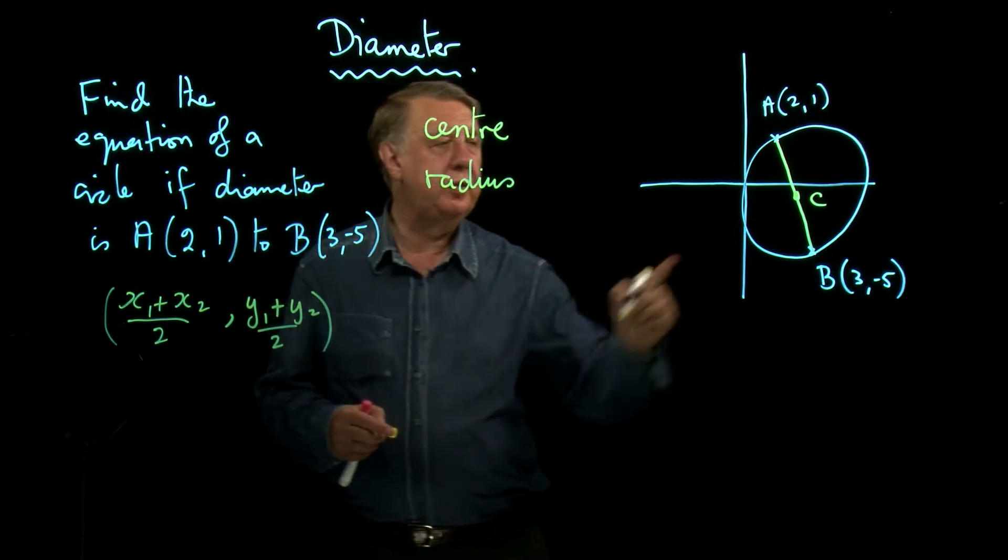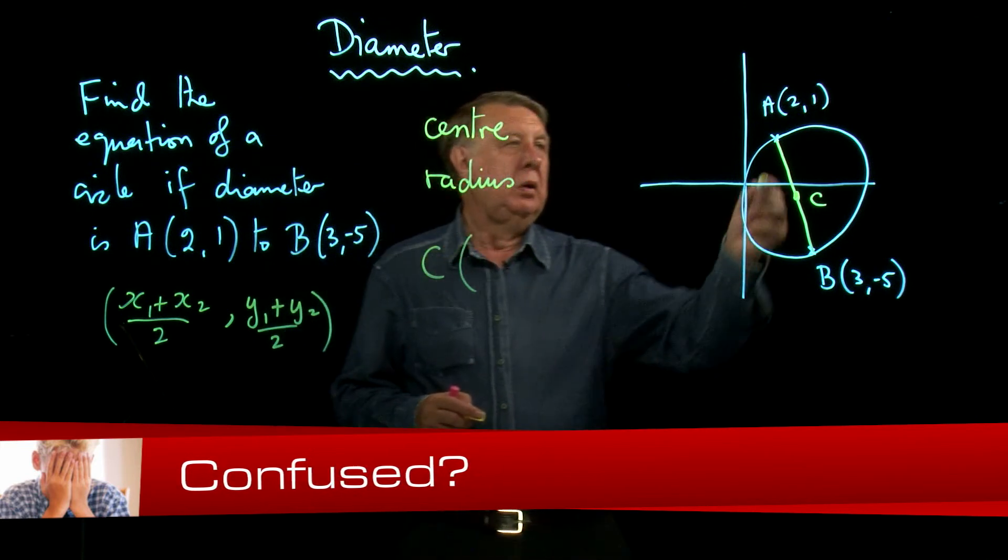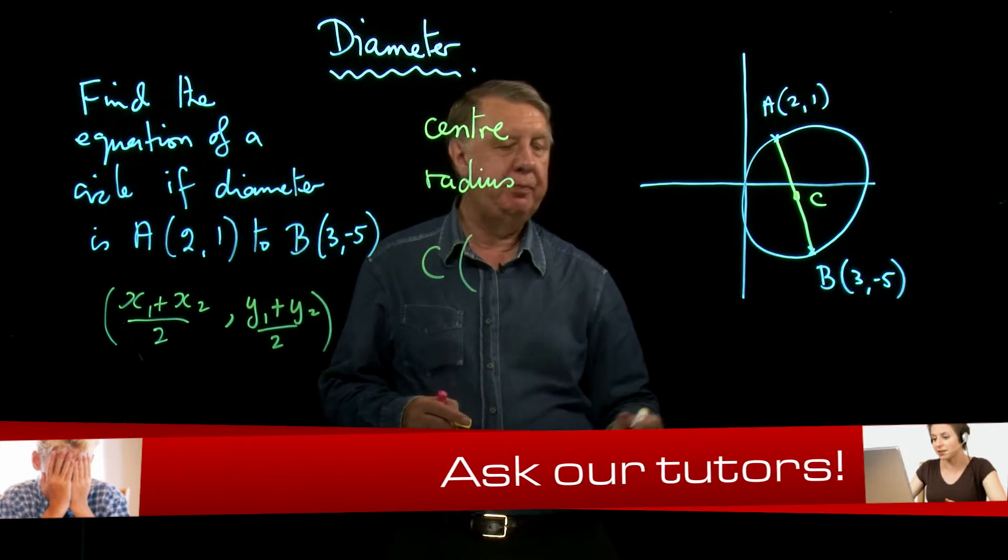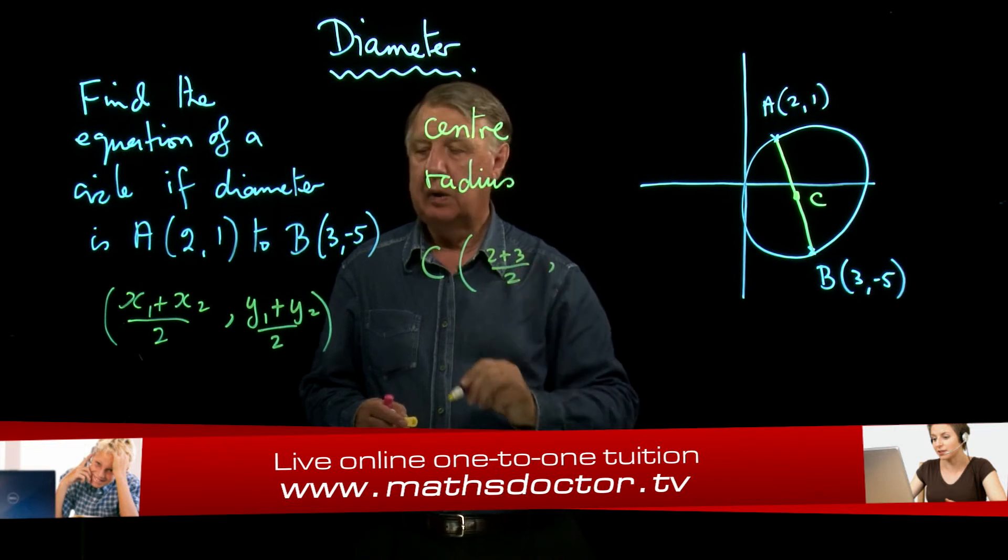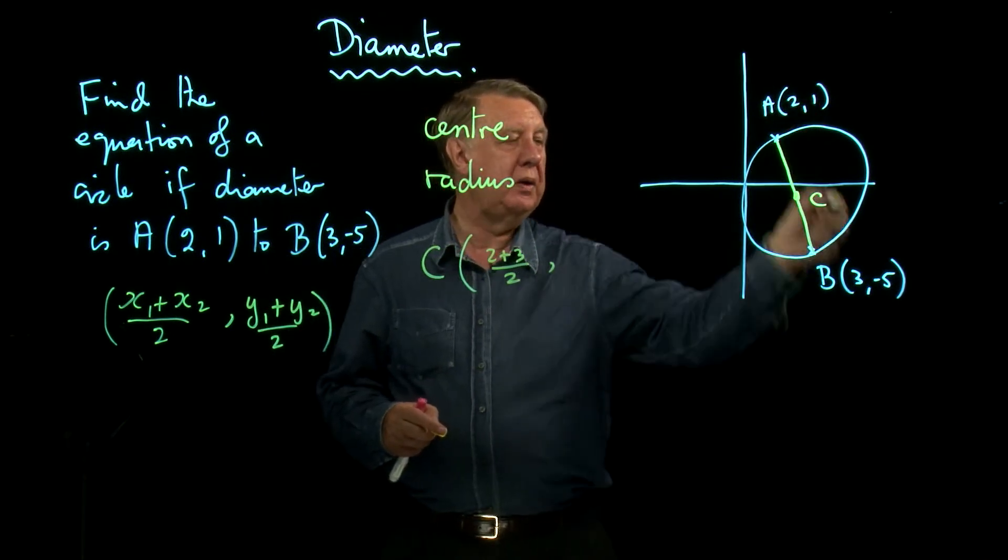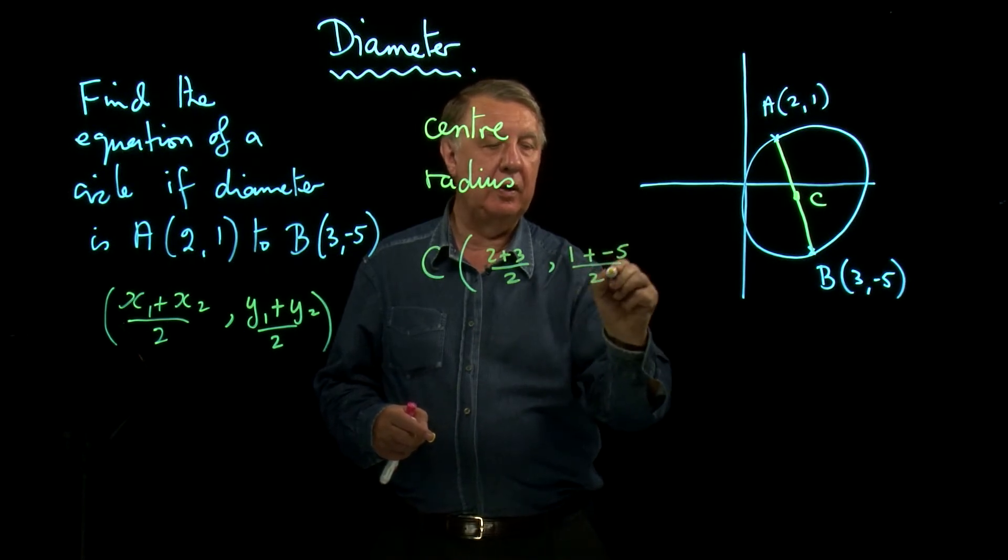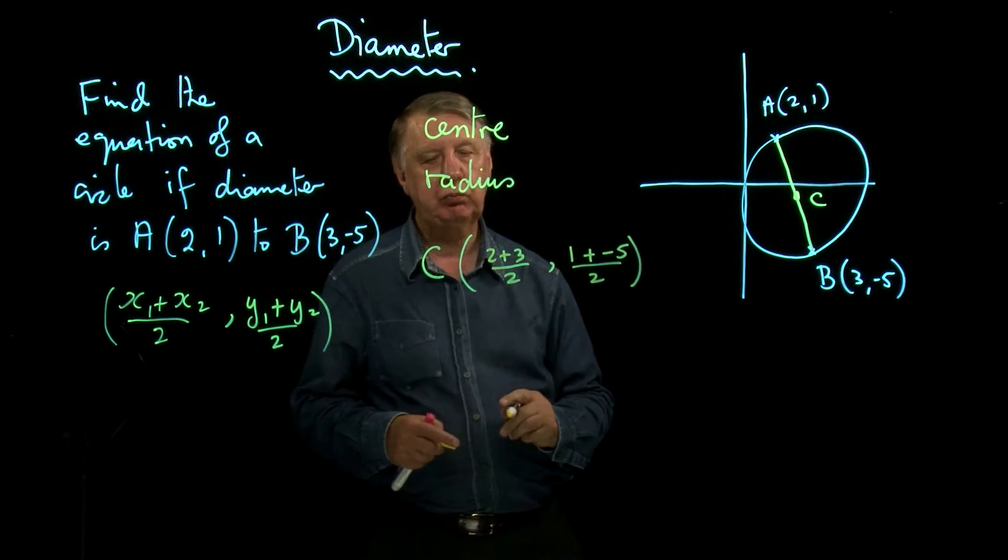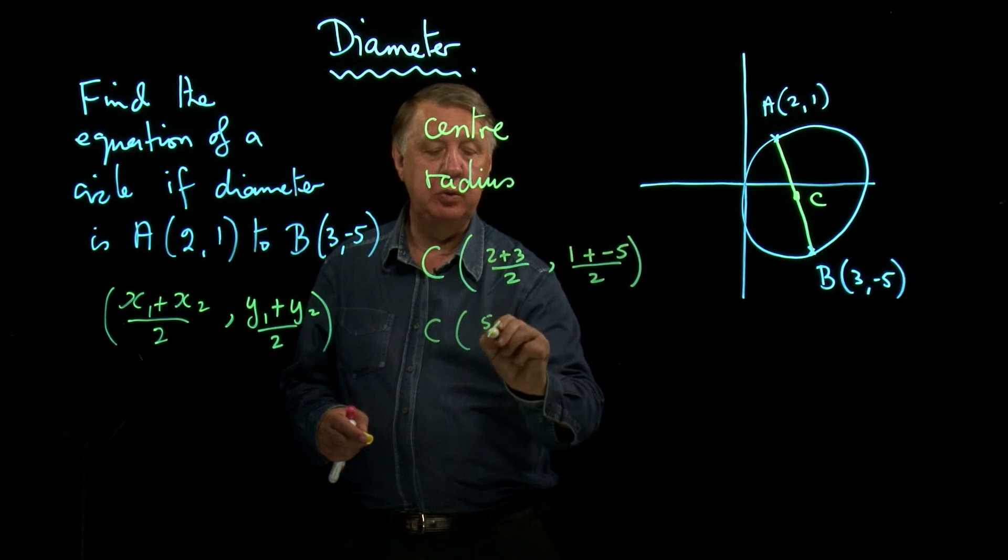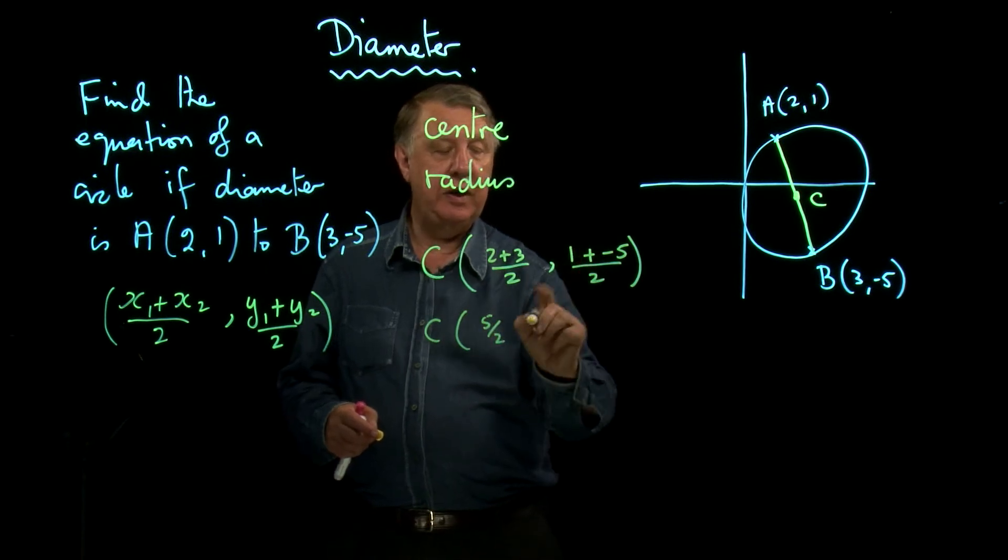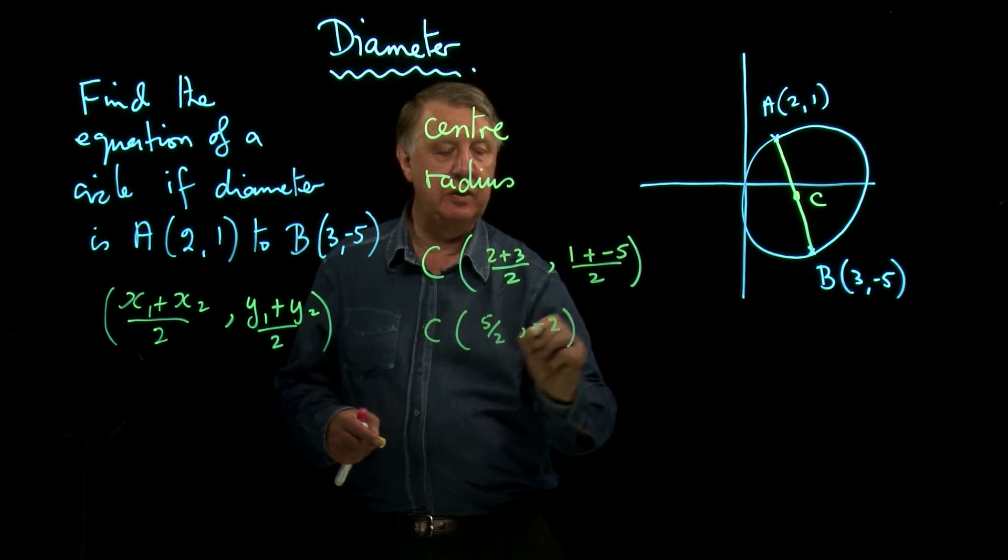So for this example here then C, 2 add 3 over 2, and Y1 plus Y2, 1 add negative 5 over 2. So the center is 5 over 2, negative 4 over 2 which is negative 2.